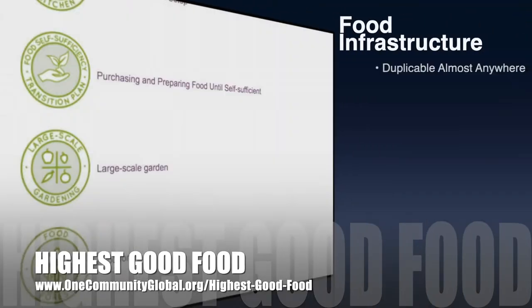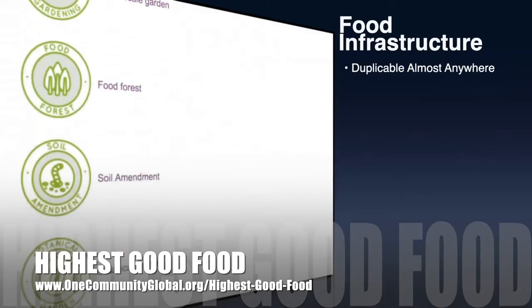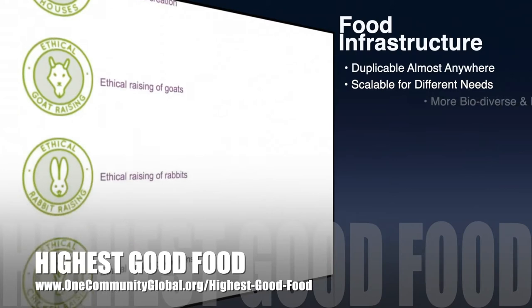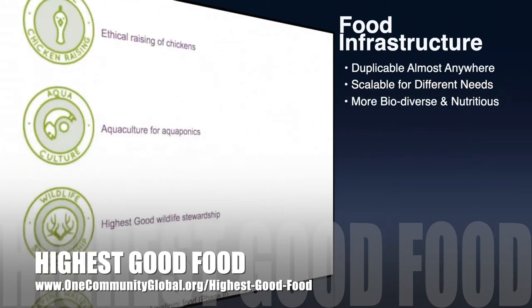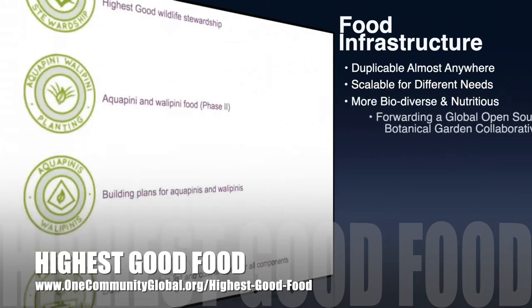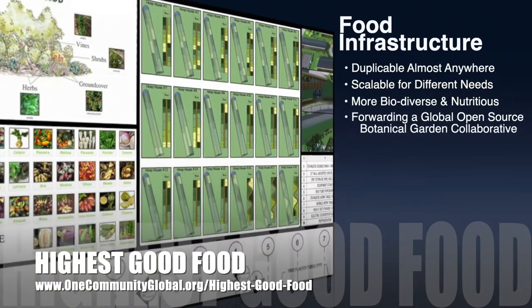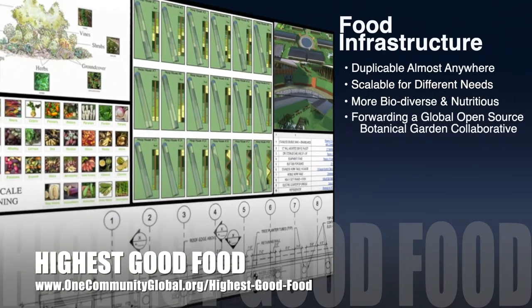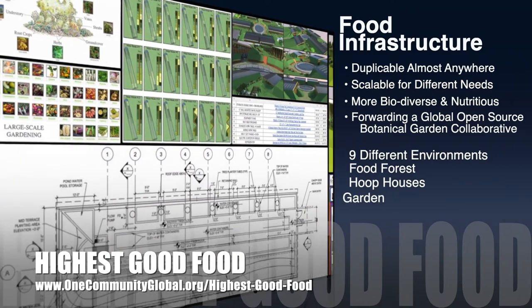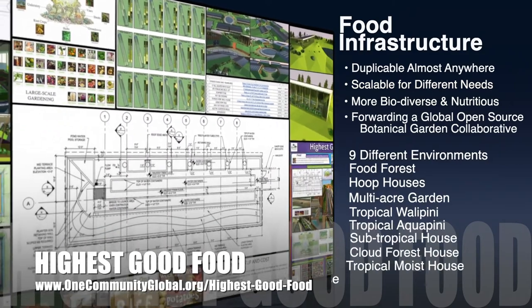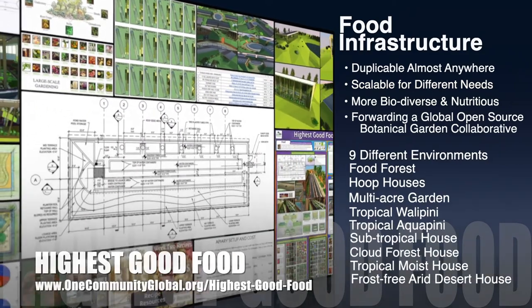One Community's approach to highest good food is duplicable almost anywhere, scalable for different needs, more biodiverse and nutritious, part of forwarding a global open-source botanical garden collaborative, and includes nine different free-shared and duplicable growing environments.